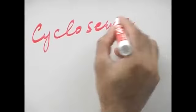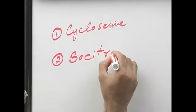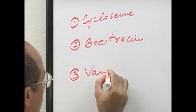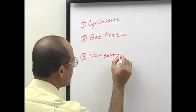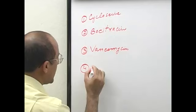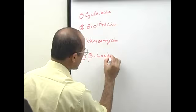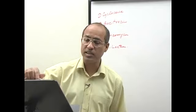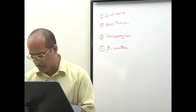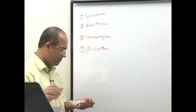The cell wall synthesis inhibitors include cycloserine, bacitracin, vancomycin, and the beta-lactam group of antibiotics.